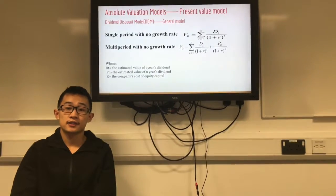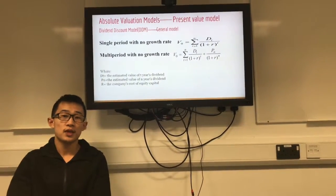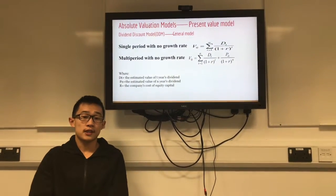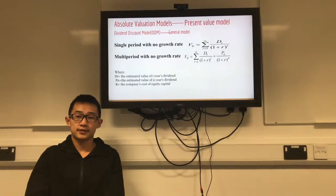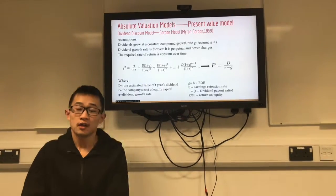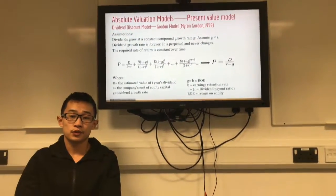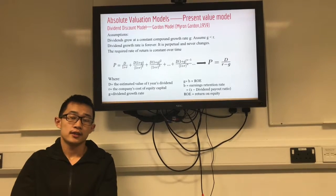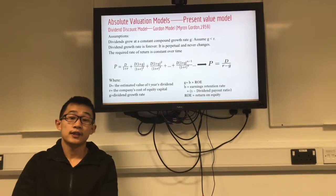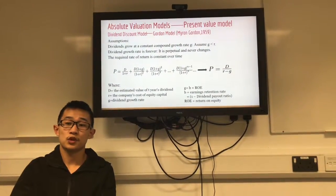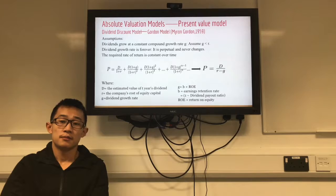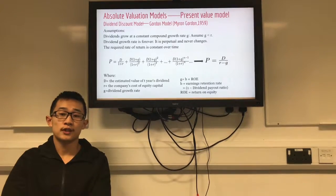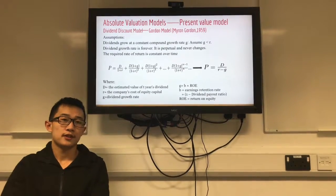Here we have the dividend discount model, general model. As you can see on screen, this includes two formulas: the first is a single period with no growth rate, and the second is a multi-period with no growth rate. As for the Gordon Growth Model, introduced by Gordon in 1959, there are some assumptions: the dividend grows at a constant compound growth rate G, the dividend growth rate is perpetual and never changes, and the required rate of return is constant over time. The formula can be viewed on screen.